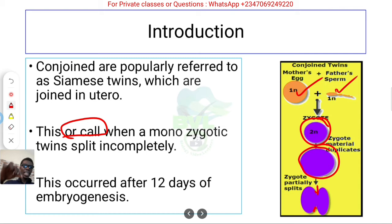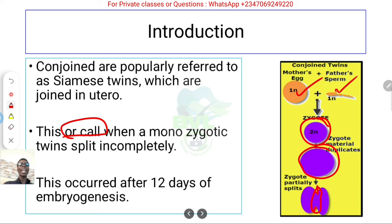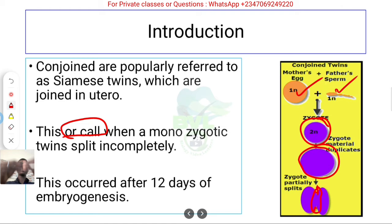The part of the body that was supposed to split remains joined together. This could be the head, the back, the chest, the side, the arm, or the abdomen. Whatever part of the embryo was still held together is what remains joined, potentially all the way to adulthood.